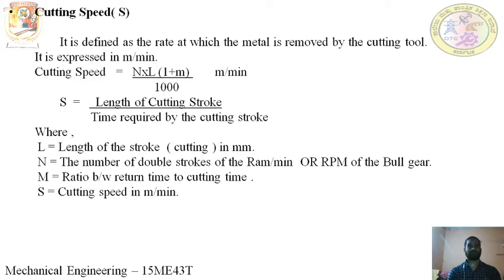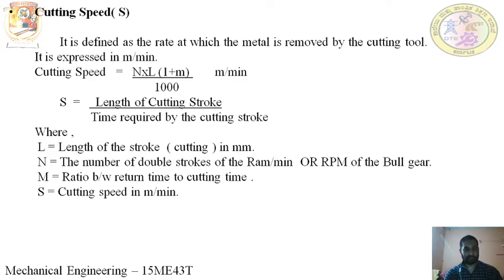The cutting speed is given by the formula: N into L, multiplied by (1 plus M), divided by 1000, in meters per minute. Where S is the length of cutting stroke divided by the time required by the cutting stroke — so S is the cutting speed.